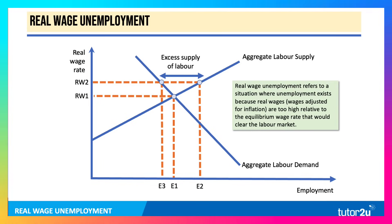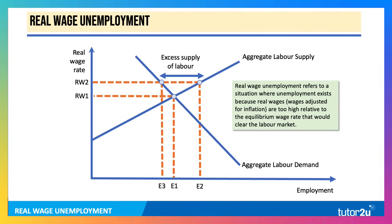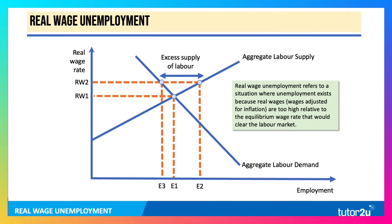But if the real wage rate is RW2, then labour supply expands and labour demand contracts, leading to an excess supply of labour of E3 to E2. That essentially is real wage unemployment.